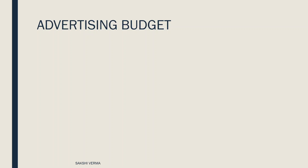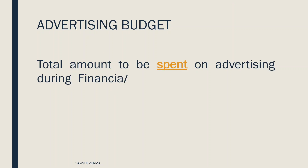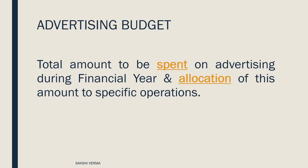Advertising budget means the total amount which is to be spent on advertising during a particular financial year and its allocation to specific operations. An organization has different departments, and different departments have different activities. Advertising is part of the marketing department, and when the marketing department gets the budget it has to allocate the budget to different activities, advertising being one of them. Then within advertising you have to allocate to different sub-activities.